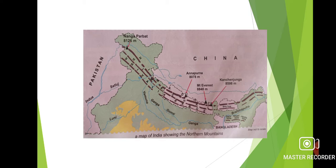Our country India has various landforms that make it unique and interesting. Landforms of India can be grouped under six divisions: the Northern Mountains, the Northern Plains, the Thar Desert, the Peninsular Plateau, the Coastal Plain and the Islands.